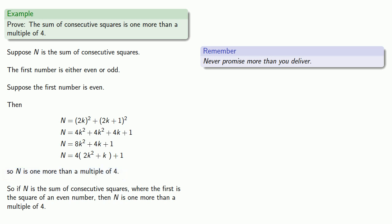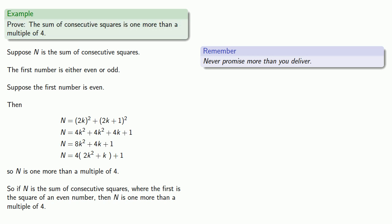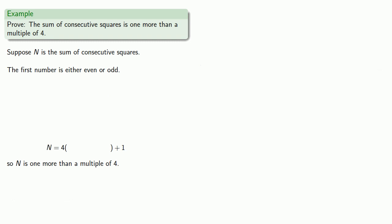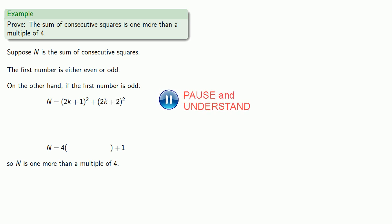Now, if this was a pencils-down situation, we've at least proved something. It's not what we wanted to prove, but it's close. We can complete the proof by considering the other possibility. So our roadmap remains the same, but instead of assuming the first number is even, we'll assume it's odd. Then n is the sum of the square of an odd number plus the square of the next number.